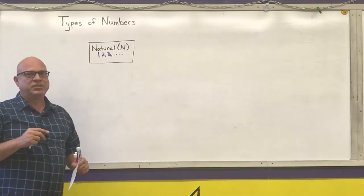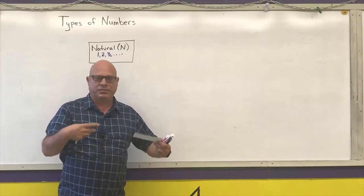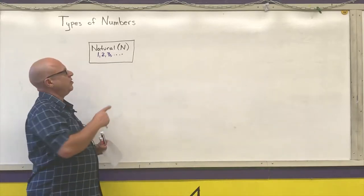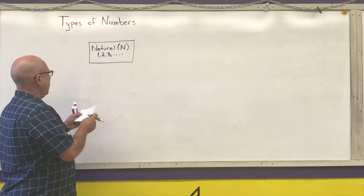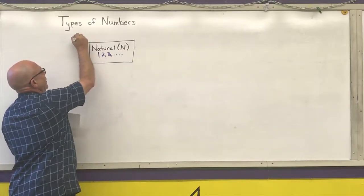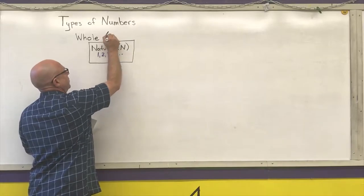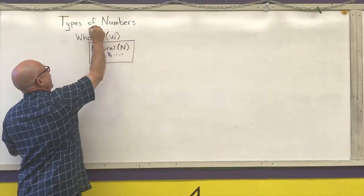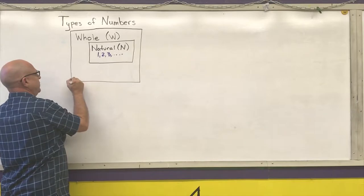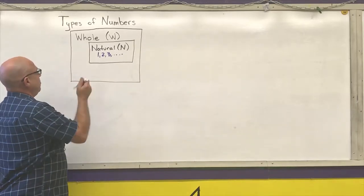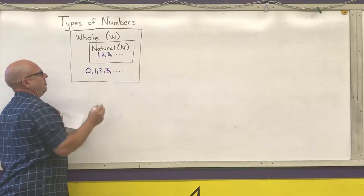The next thing we did is we started subtraction. If I have three apples and I eat two of them, I have one apple left. We needed a way to represent not having anything at all, and that was the number zero. Once I add zero in, I have what is called the whole numbers. The whole numbers have the symbol capital W, and it contains all of the natural numbers plus zero. So our whole numbers are zero, one, two, three, and on.